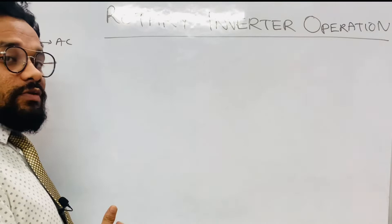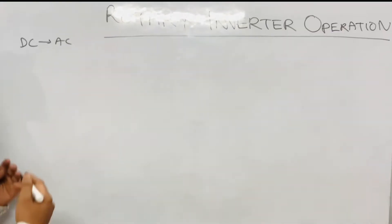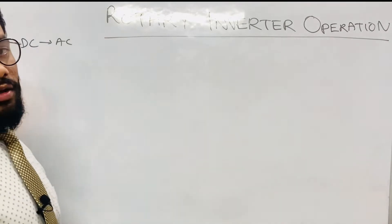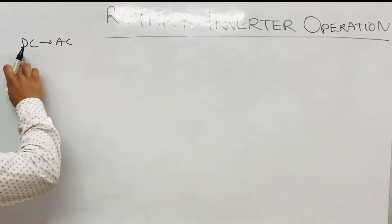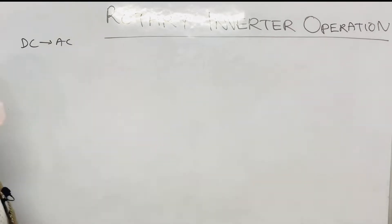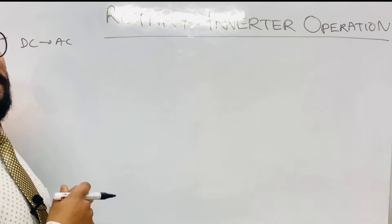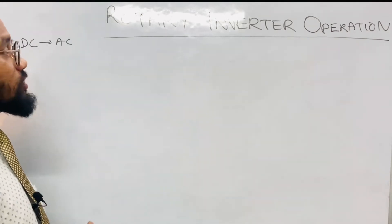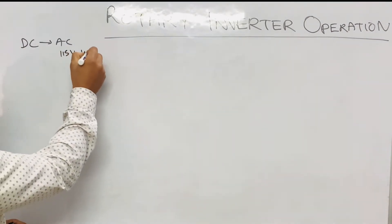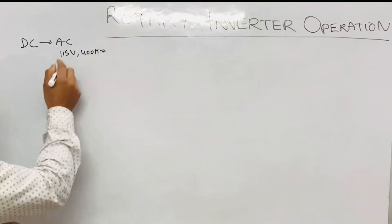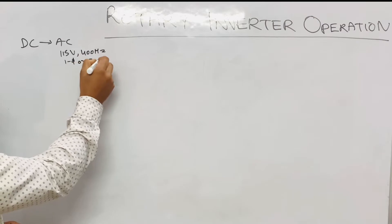The DC input can be from batteries — a 14 volt battery system or a 28 volt battery system. In the explanation today, it will be about the 28 volt DC system. This DC is converted to AC, which can be single phase AC or three phase AC having a voltage of 115 volt at 400 hertz.